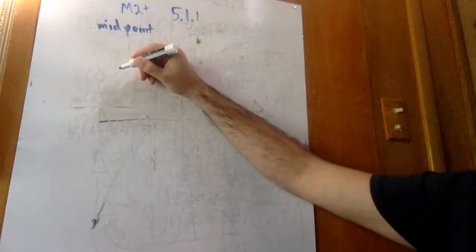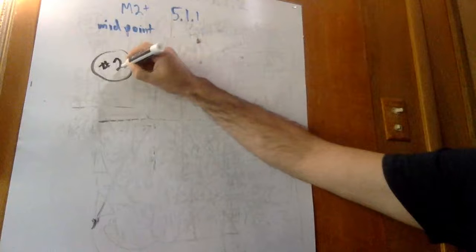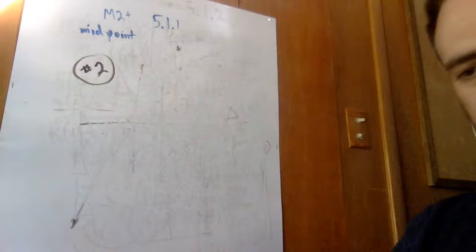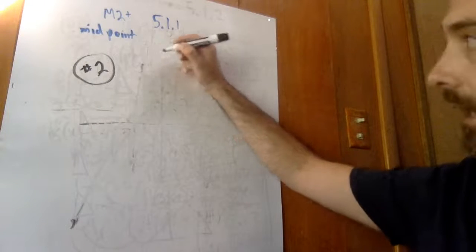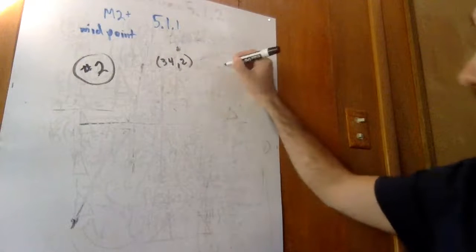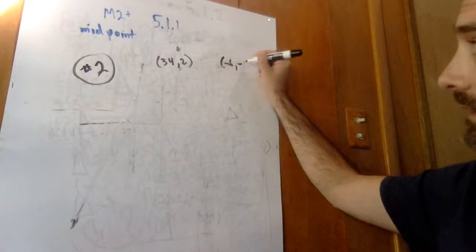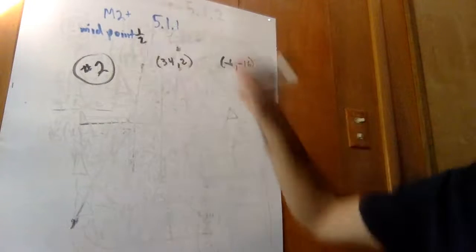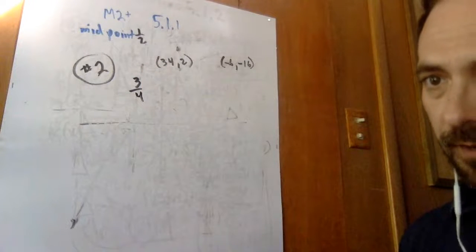All right, we're looking at number 2 now. When we get to number 2, it's still related to midpoint, but the only difference is instead of going halfway, we're going a different ratio. We know that we have endpoints of (34, 2) and (negative 6, negative 16). The midpoint would be going halfway between them, but instead we want to go three-fourths of the way from the endpoint (negative 6, negative 16).